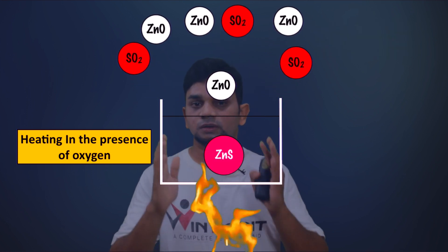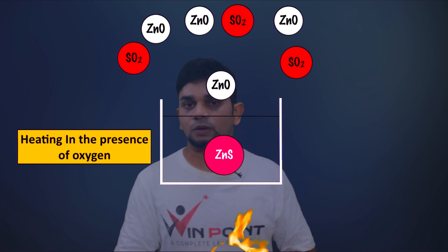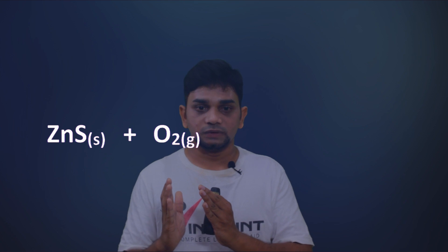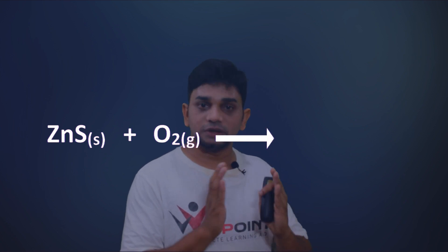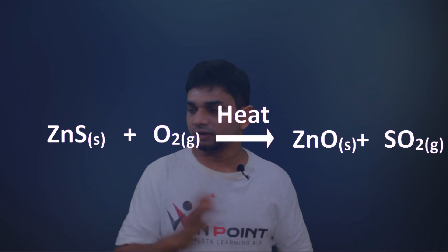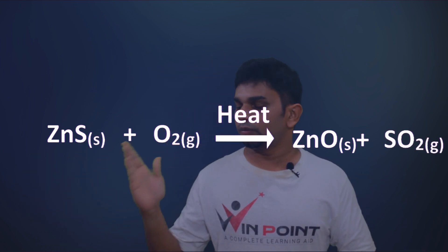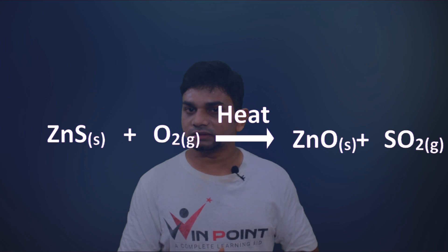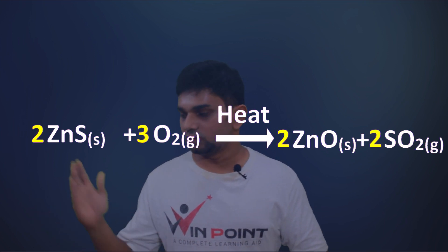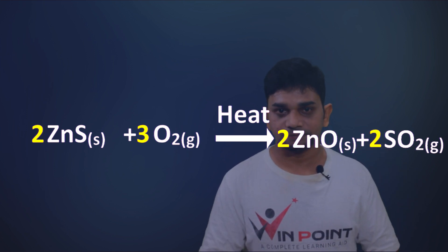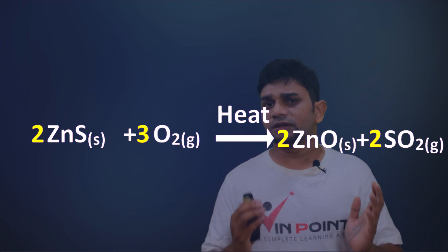The reaction is: ZnS + O₂ → ZnO + SO₂. The balanced equation is: 2ZnS + 3O₂ → 2ZnO + 2SO₂. That is the balanced equation for the roasting of zinc sulfide.